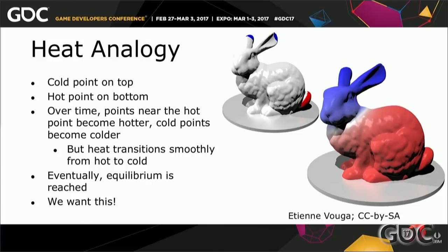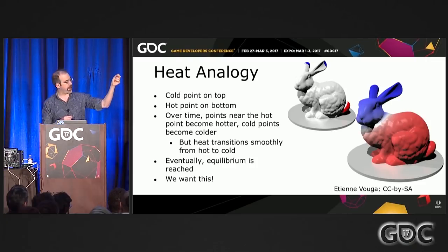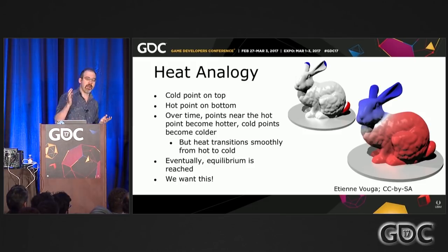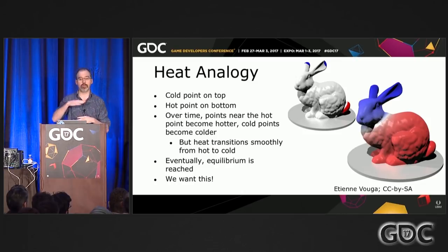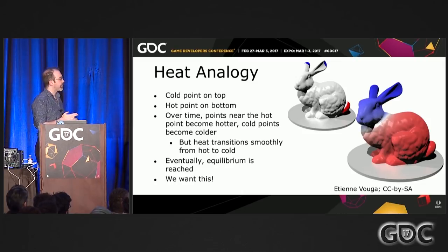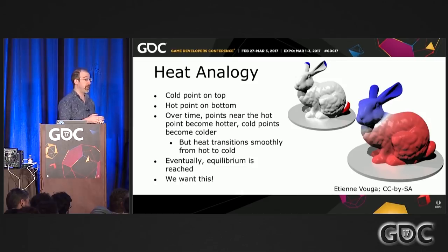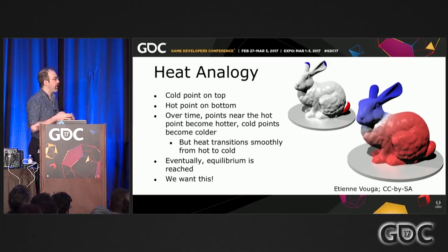Here's a couple of bunnies. Imagine that I have an infinitely cold thing that stays at a certain cold temperature — I put it on the ears of the bunny. And I have a thing that maintains a constant hot temperature, say 100 degrees, and I put it on the tail. Over time, areas near the hot point become hotter, areas near the cold point become colder, and heat transitions smoothly from hot to cold through the mesh. What happens over time is that you reach an equilibrium state. This is known as the heat equation — an example of a partial differential equation. We want to create this effect on a computer with a triangle mesh.